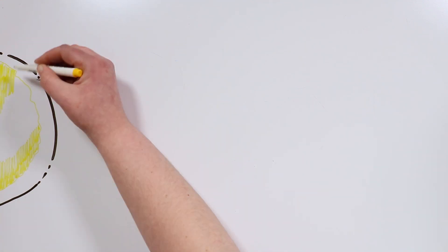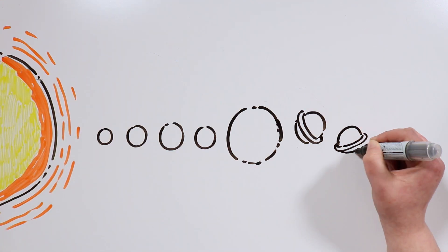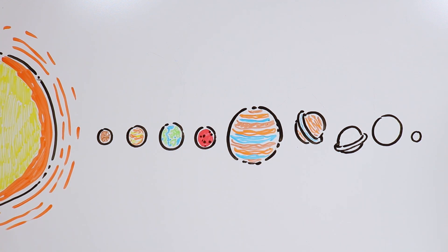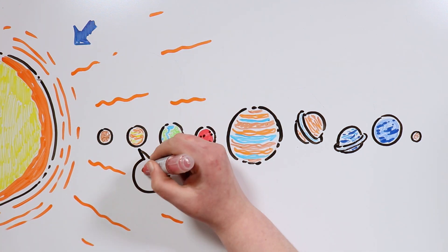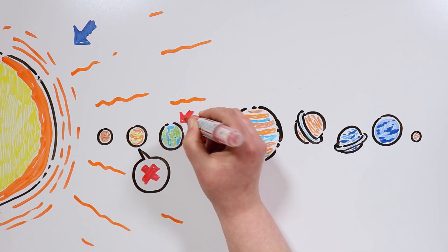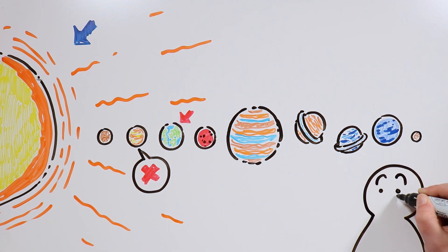The solar system was formed around 4.57 billion years ago, and from then on it has gradually increased its luminosity. That increase left Venus outside of the Goldilocks zone, and in a few billion years the same will happen to Earth. Incredible, isn't it?